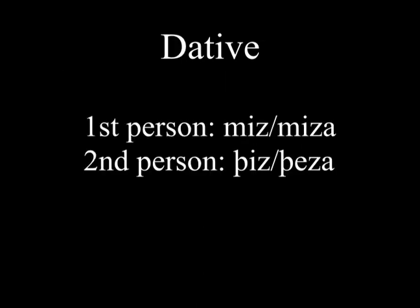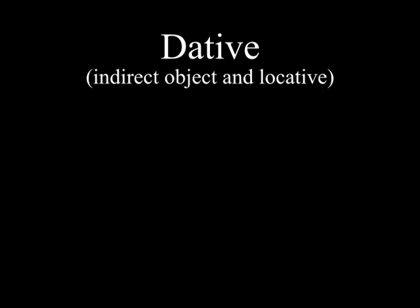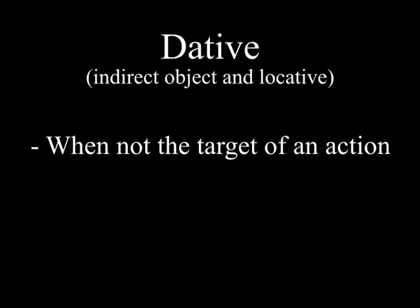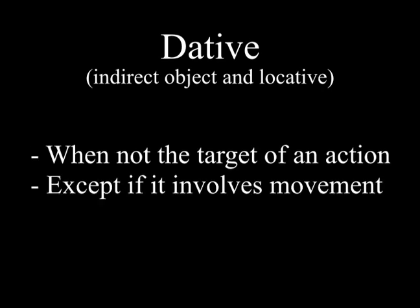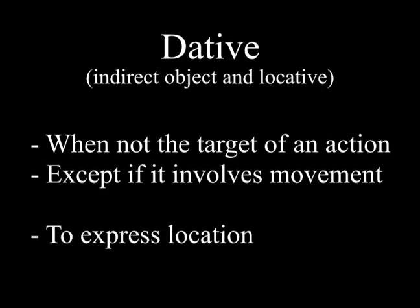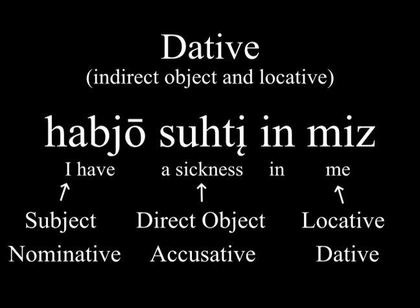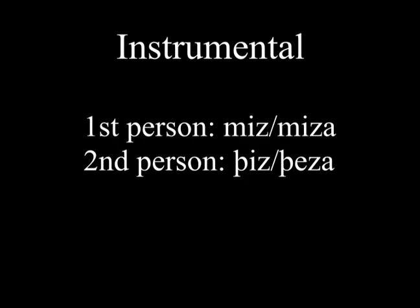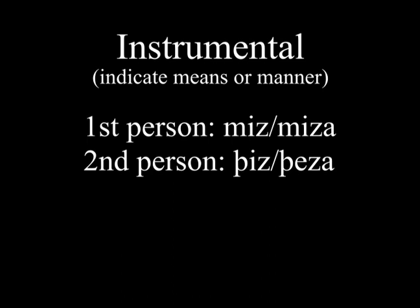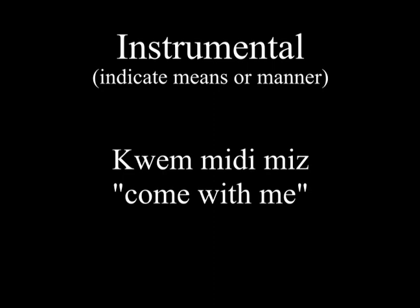Dative: 'mis' or 'misa'; 'these' or 'cesa'. The dative has two main roles in Theodisco: indirect object and locative. The indirect object is used when an object in a sentence is not the target of an action — the only exception being when the object undergoes motion towards something, which then triggers the accusative. A locative is when the object's position is related to the subject, typically with prepositions like 'on' or 'under'. An example would be 'I have a sickness in me'. The instrumental case uses the same pronouns as the dative, indicating means or manner, and often goes with the preposition 'meek' (with). Example: 'quem meek mis' — come with me.